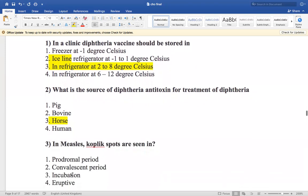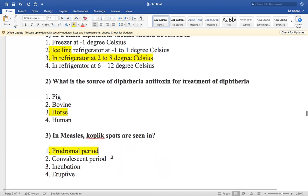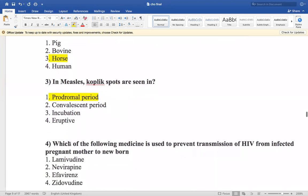Now the next question is: in measles, Koplik spots are seen in prodromal period, conversion period, incubation period, or eruptive period? So Koplik spots are seen in prodromal period.